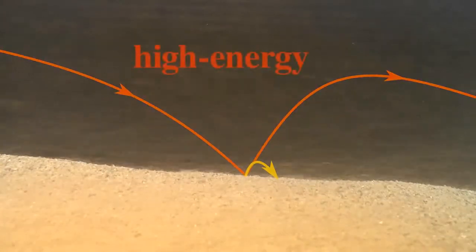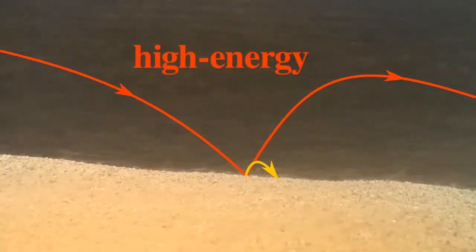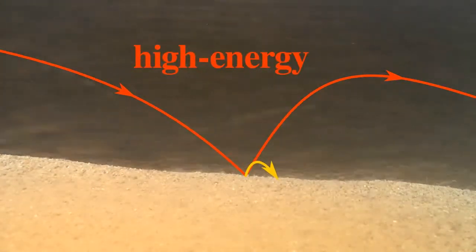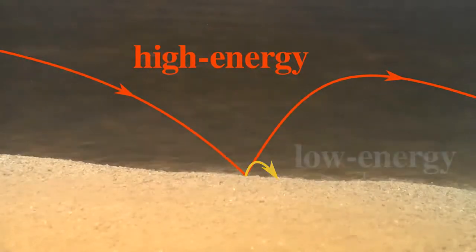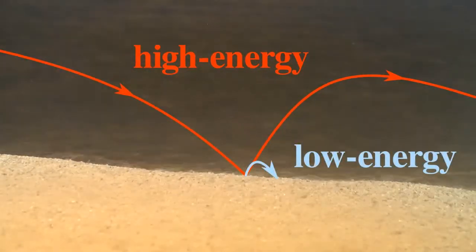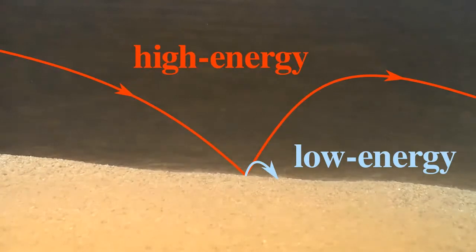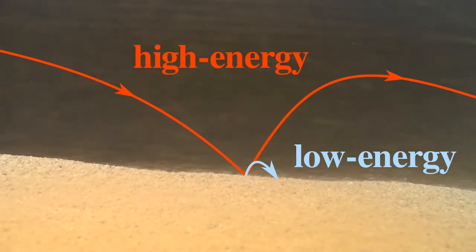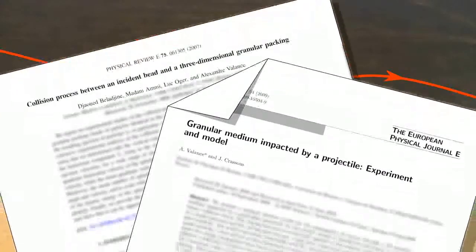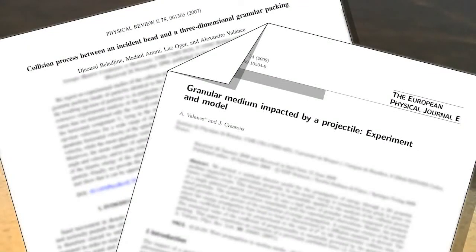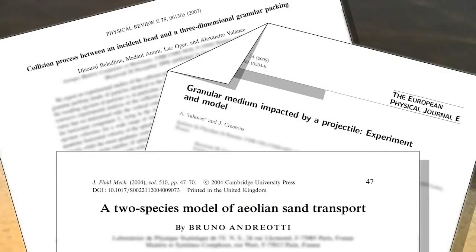Fast high-energy grains perform large jumps. Upon rebound from the sand bed, they eject some low-energy grains that quickly get trapped in the sand bed again. Recent research has accumulated a lot of experimental, numerical and theoretical indications that such a radical reduction still captures the essential physics.